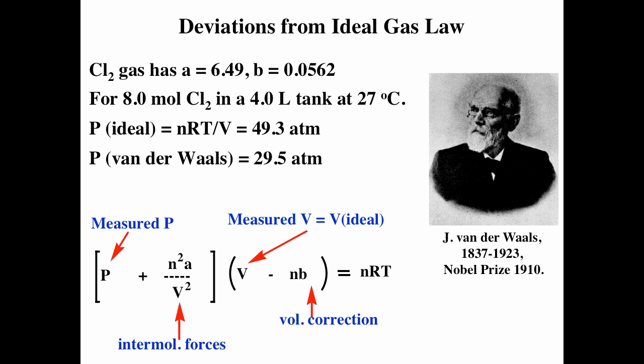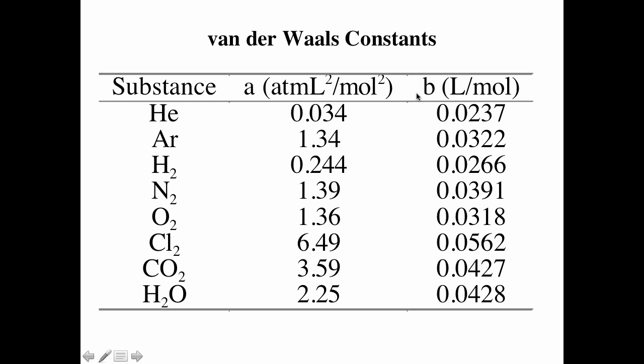In these correction terms you have the A and the B, and different gases have different values for A and B. For chlorine versus helium — helium has a smaller A because it's going to behave ideally over a wider temperature range. Van der Waals' is an empirical equation trying to take into consideration non-ideal behavior of gases.